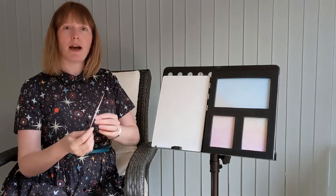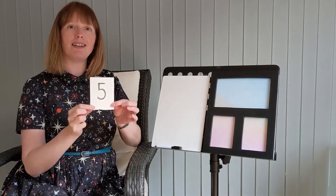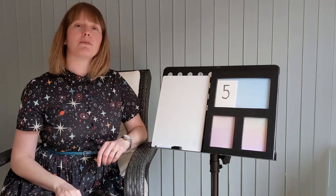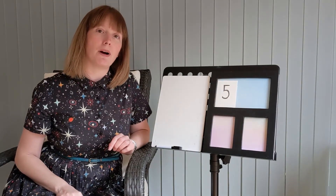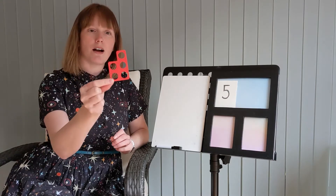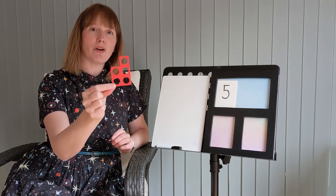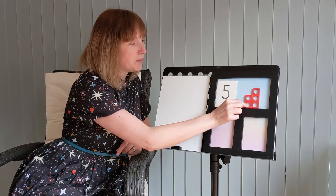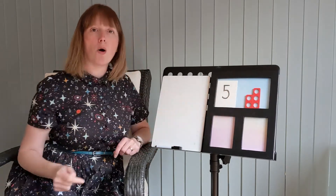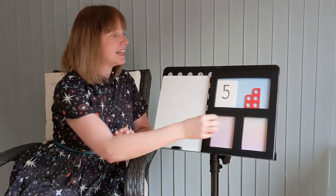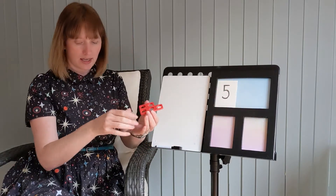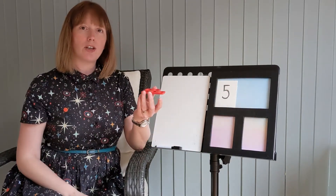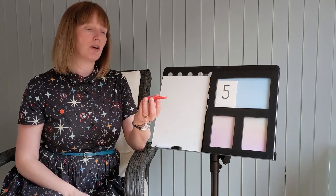Today we are going to be thinking about the number five. I'm going to pop that up here because that is going to be our whole number. Now I love Numicon so I'm going to use a mixture of Numicon and Multilink today. I want my Numicon piece to show that whole. So here's my whole number and I'm going to check with the children that I've got five cubes to go with my Numicon piece.